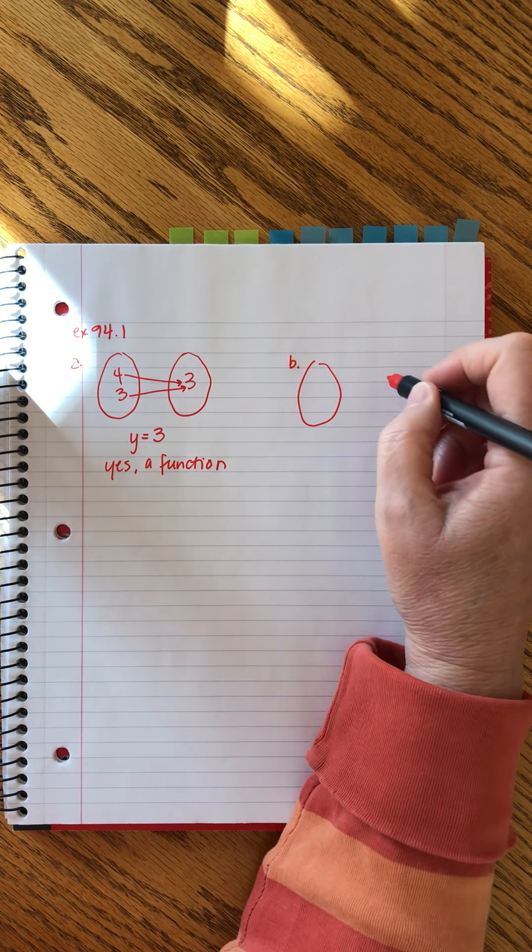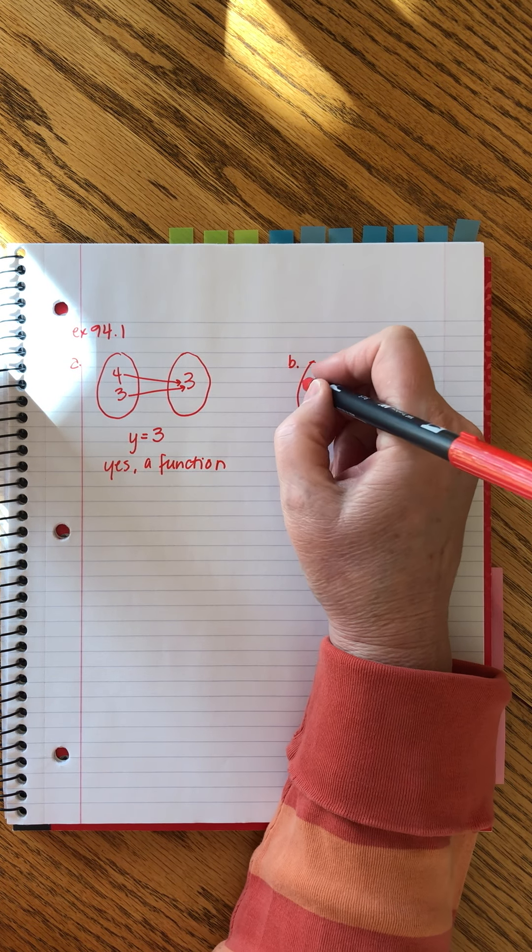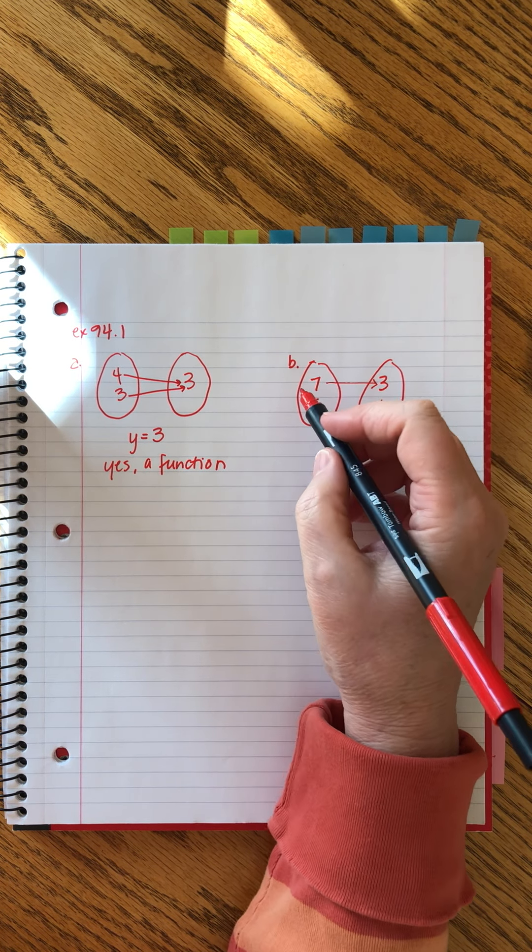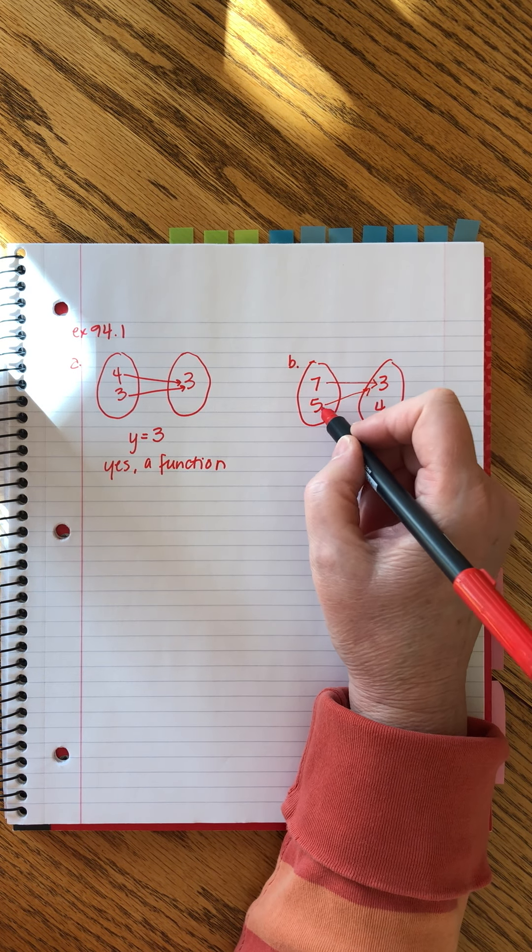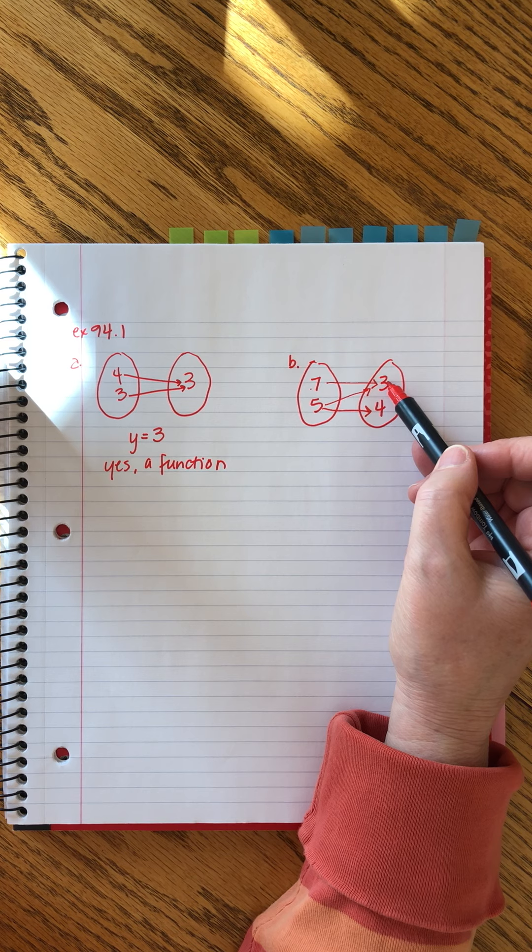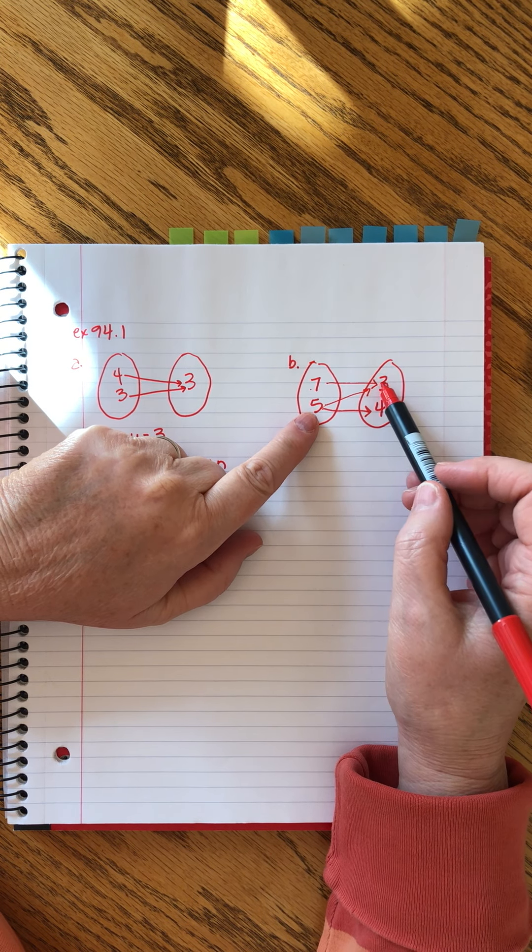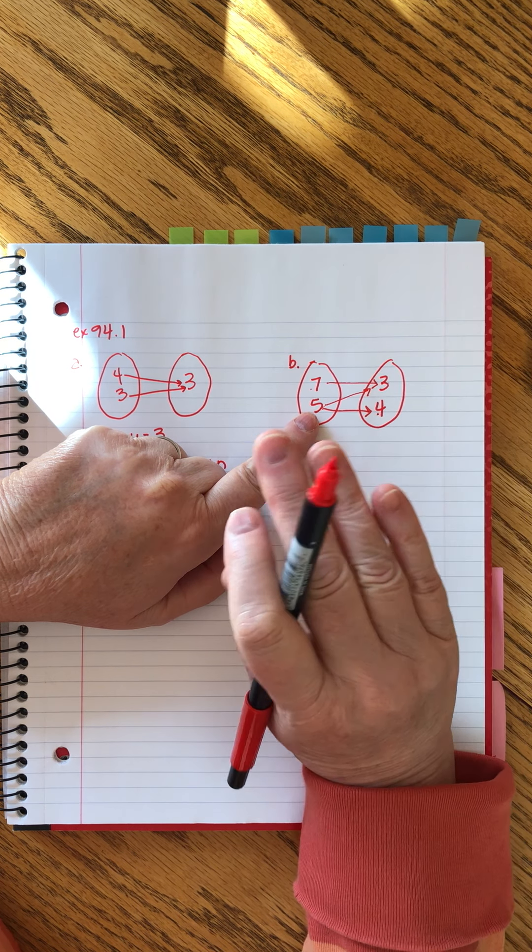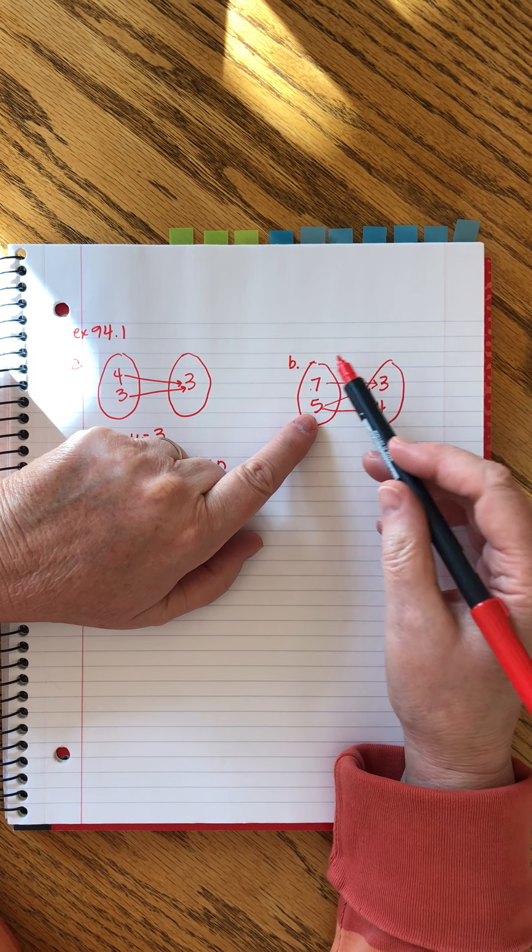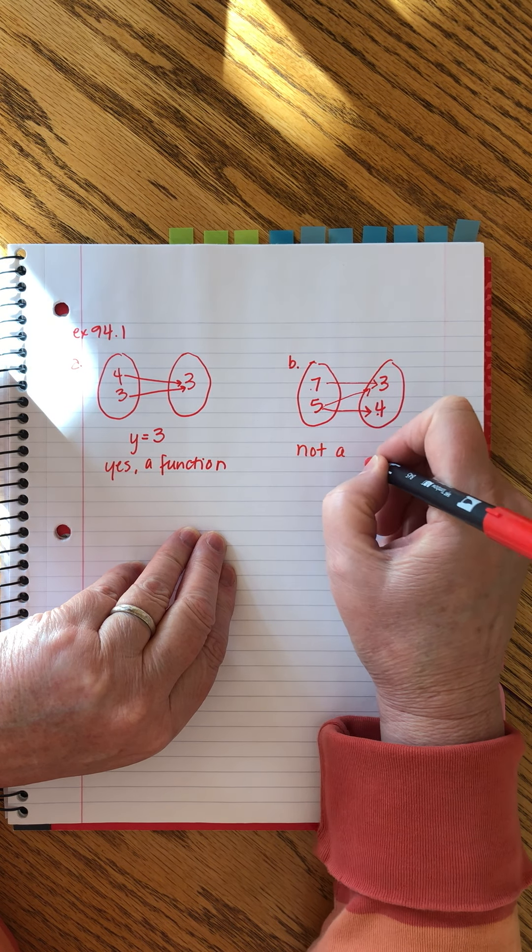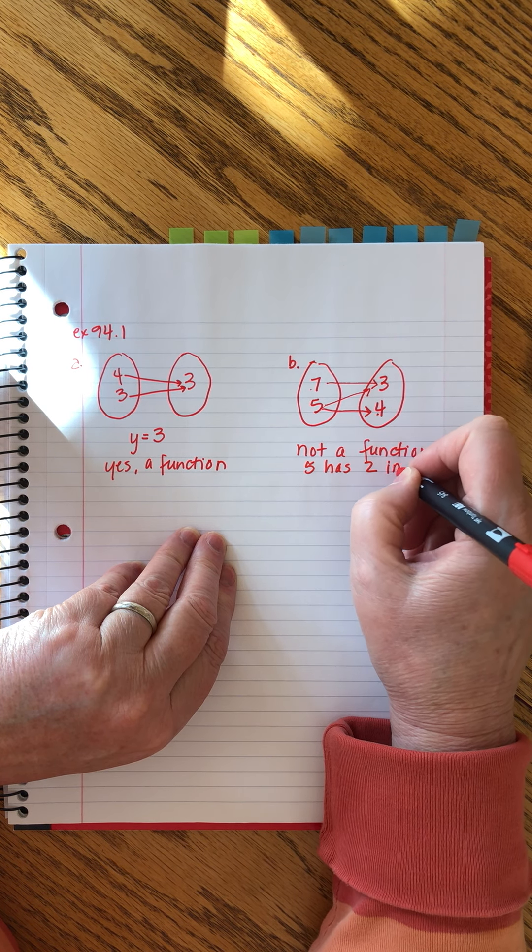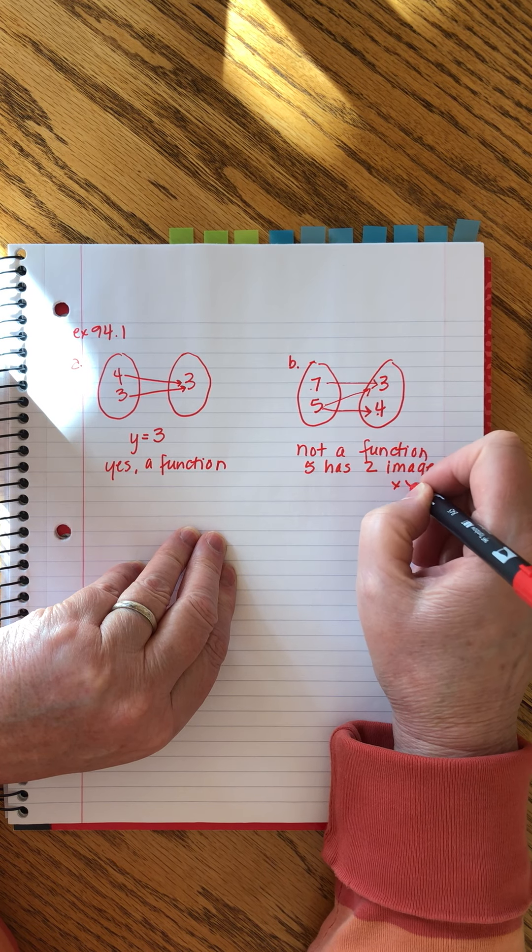B. Now check out these arrows. Seven is paired with three. Okay, that looks really good. But what's going on with five here? Five is paired with three and five is paired with four. That is a problem because if you're putting five into some function, you should always get the same answer. So whatever's going on here, no, this is not a function. Because five has two images. No bueno. That's what killed it right there.